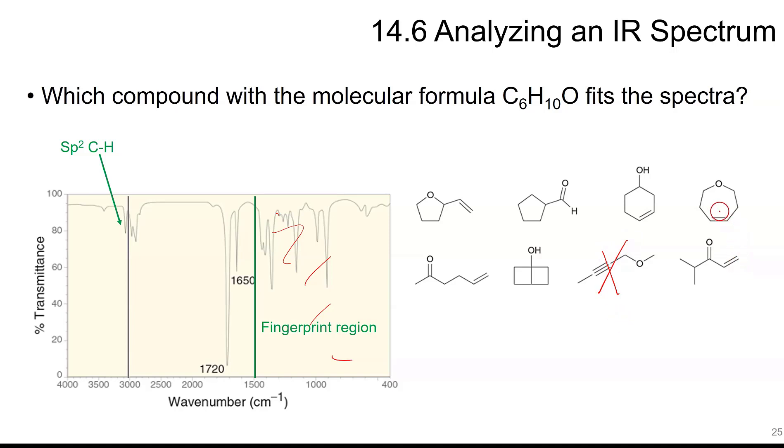This has one, this has one, this has one. This does not. Those two we can rule out. The next peak is an SP3 CH. So if we don't have SP3 CHs, we can rule that one out. We can also rule this one out. So all of them have SP3 CHs that are left. So we'll go on to the next peak.